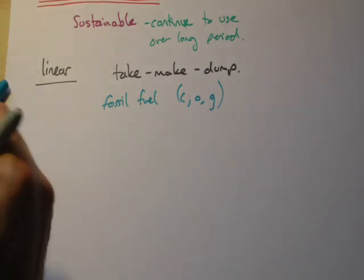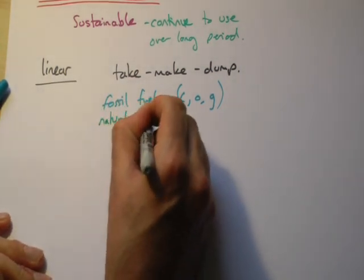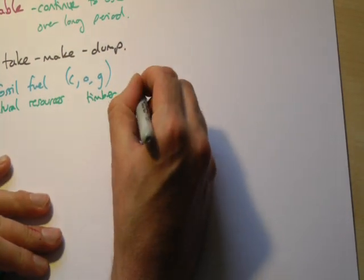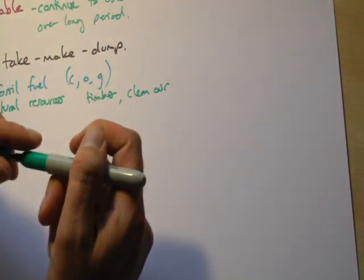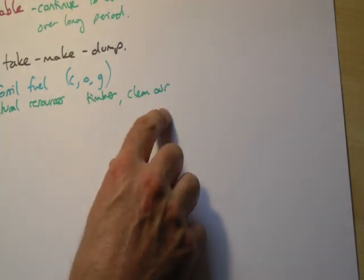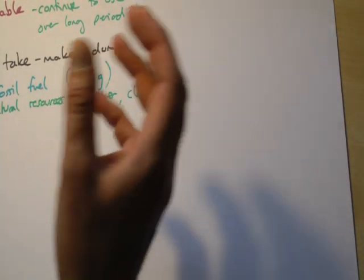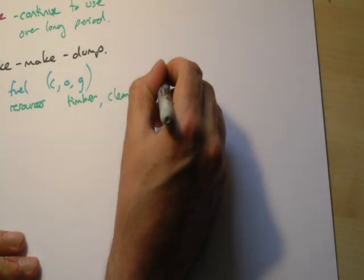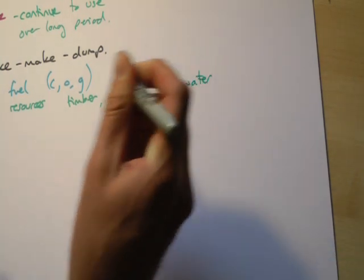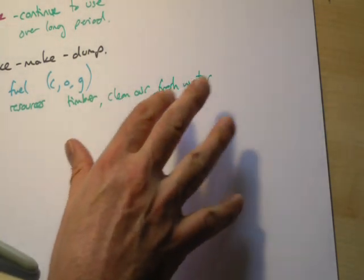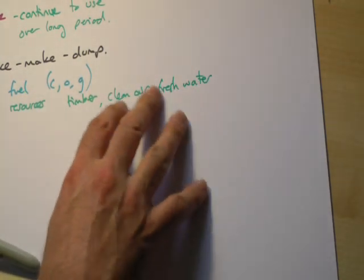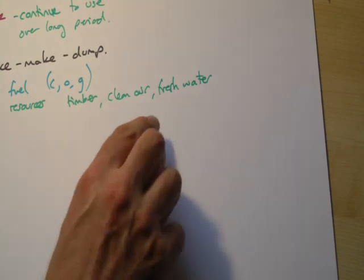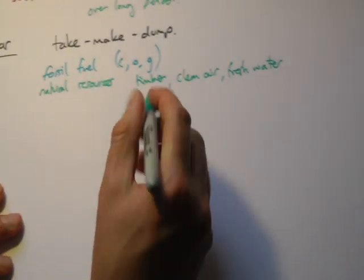Some of the natural resources we have include things like timber and wood, clean air — you might not think of air as a resource, but in places with a lot of pollution like Beijing there's a lot of particulate smoke making it unpleasant and unlivable. Fresh water is another — certain places are starting to run out of fresh water due to increased population pressure. If you don't have water for three or four days, you can die, and contaminated water brings disease and death.